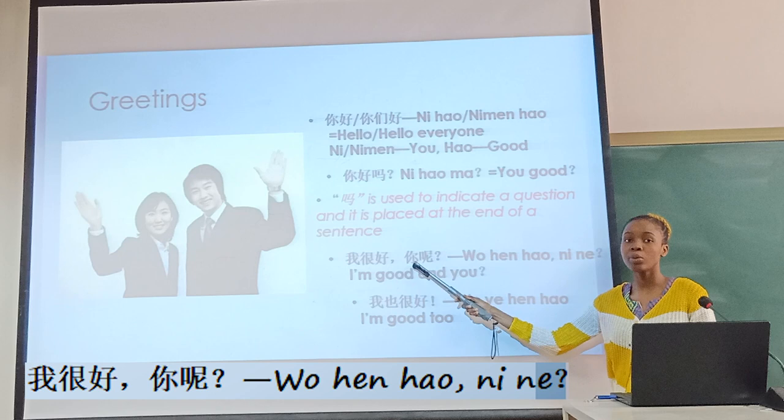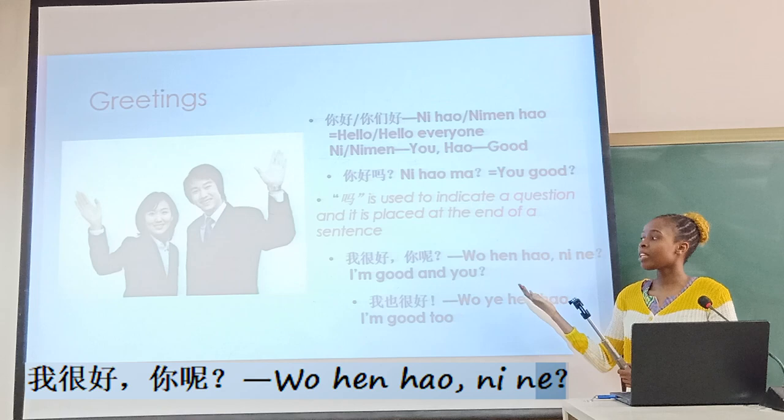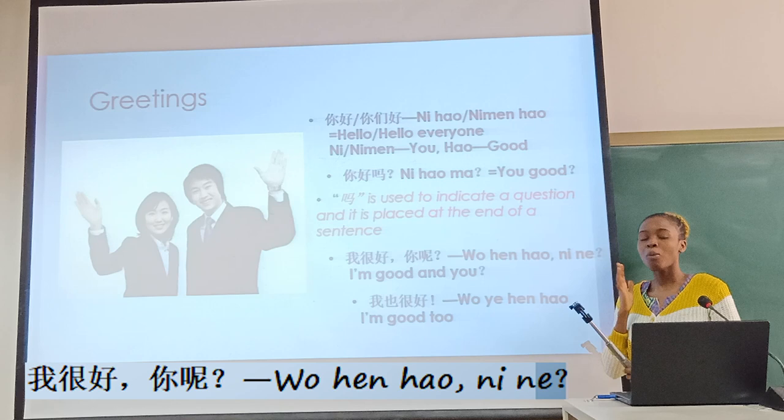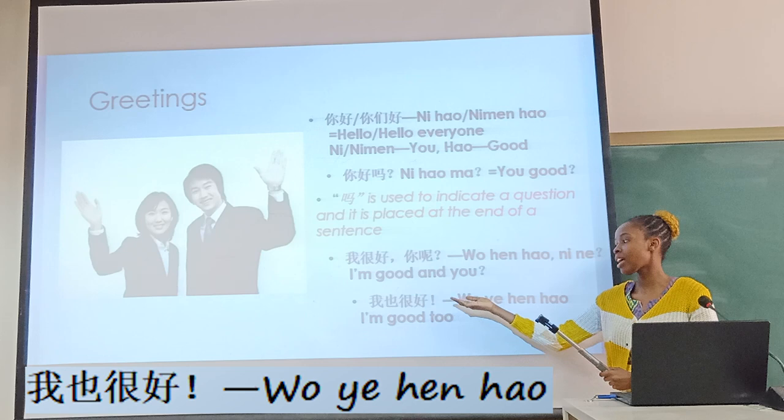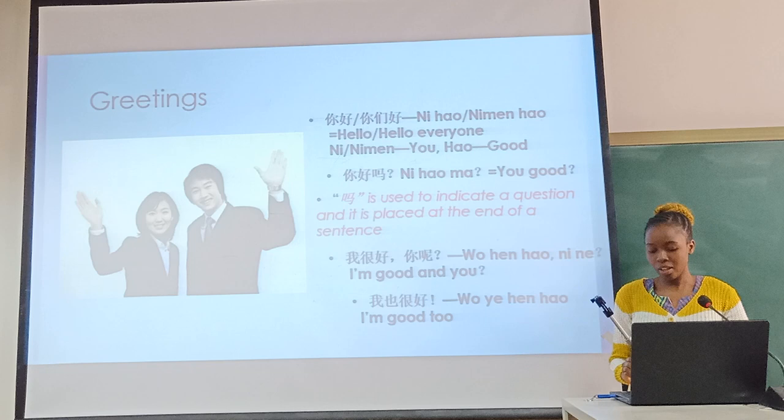You already learned Nǐ, which means 'you'. So when you say Nǐ ne, it means 'and you?' So the full exchange goes: Nǐ hǎo — Nǐ hǎo — Nǐ hǎo ma? — Wǒ hěn hǎo, Nǐ ne? And then the second person replies: Wǒ yě hěn hǎo, meaning 'I am also very good' or 'I'm good too'.